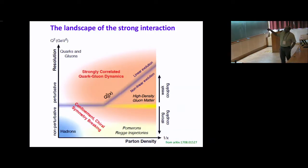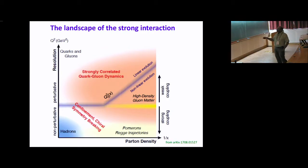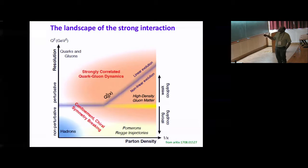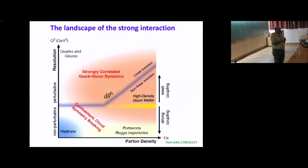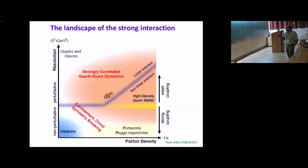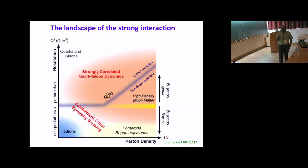The two parameters we vary are Q² — the resolution scale — and x, where one over x is proportional to the parton density. As you go to smaller x you go to higher parton densities. Part of my talk was motivation for the electron-ion collider, which we hope to have built in the United States in the next decade. I hope all of you will be interested in the science and one day contribute to it.